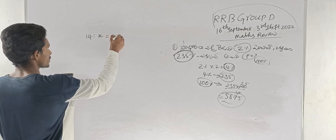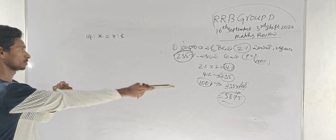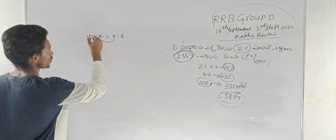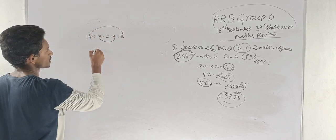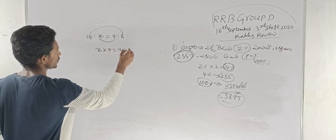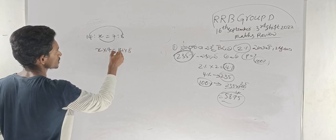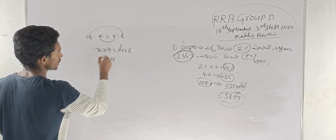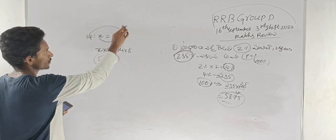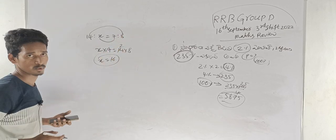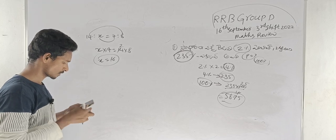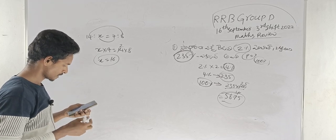So in the relation proportion, product of means is equal to product of extremes. Then x into 7 is equal to 14 into 8. So x equals 16. Product of means equals product of extremes — relation proportion makes it easy to find out. Okay, next.